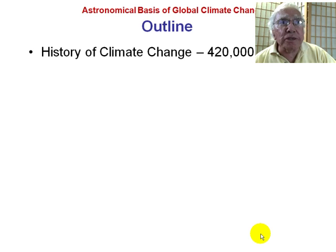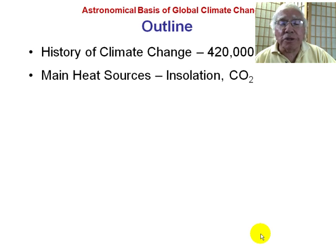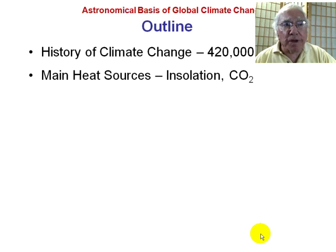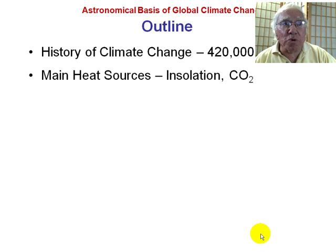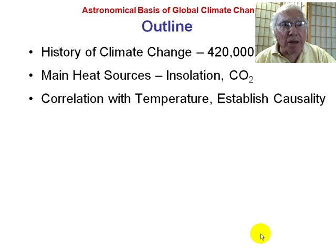We're going to first look at the history of climate change for the past almost half million years and see what information we can glean from that. There are two main heat sources we are going to be considering. One is the incident solar radiation — the direct radiation we get from the Sun that's absorbed on the first pass to the Earth, some of it reflected, and then the carbon dioxide layer re-reflects it back to Earth. Although there's one main source, namely the Sun, it does come in two shots, and we want to establish causality of these two heat sources.